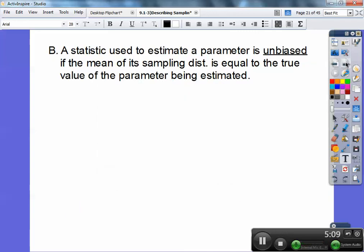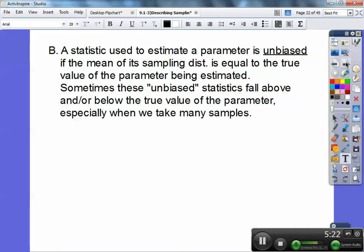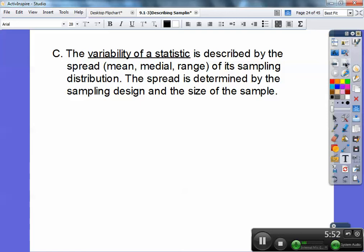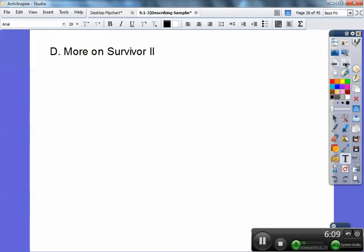The distribution is approximately normal. A statistic used to estimate a parameter is unbiased if the mean of its sampling distribution is equal to the true value of the parameter being estimated. Sometimes these unbiased statistics fall above or below the true value of the parameter, especially when we take many samples. The variability of a statistic is described by the spread, which is the mean, the median, and the range of its sampling distribution. The spread is determined by the sampling design and the size of the sample. The variability of the sampling results decrease for larger samples. Variability shrinks when you make larger samples.